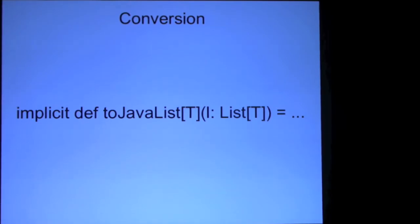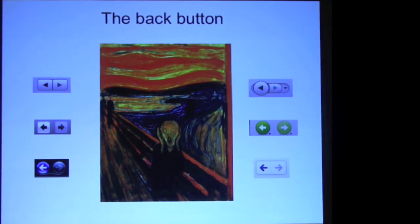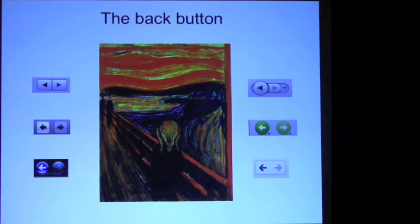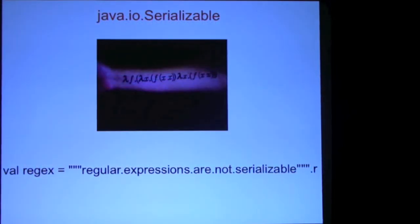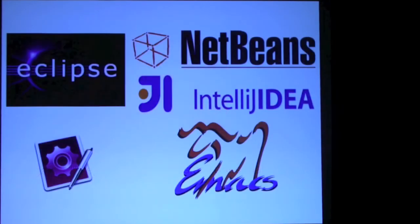Wicket handles the back button quite nicely, but it does so by copying every object via Java serialization. This means in practice that every object referenced by a Wicket component must be serializable, and that can be quite annoying. Examples of classes in Scala which are not serializable are first-class functions and regular expressions. Also, every parameter of a Scala primary constructor becomes an instance member and therefore must be serializable.